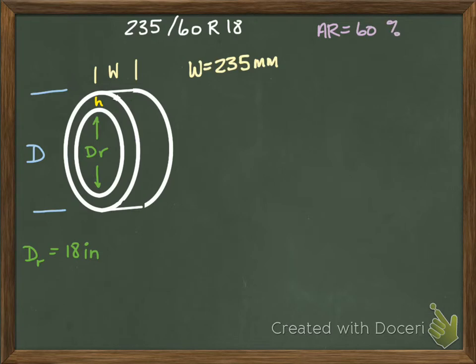So my aspect ratio is 60%, so that's 60 over 100. The aspect ratio we said before was the ratio of the height to the width. So this is the height over the W, so I can use that to find my height. The first thing I want to do is convert my width into inches instead of millimeters so that it will go with everything else.